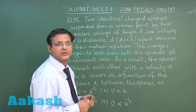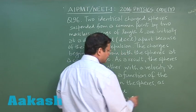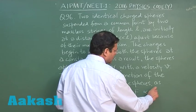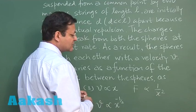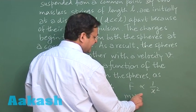The acceleration is dependent on force and force is dependent on Coulomb's law. Here you can say force is proportional to 1 by x square and acceleration is proportional to 1 by x square. So I can say mv dv by dx is proportional to 1 by x square.